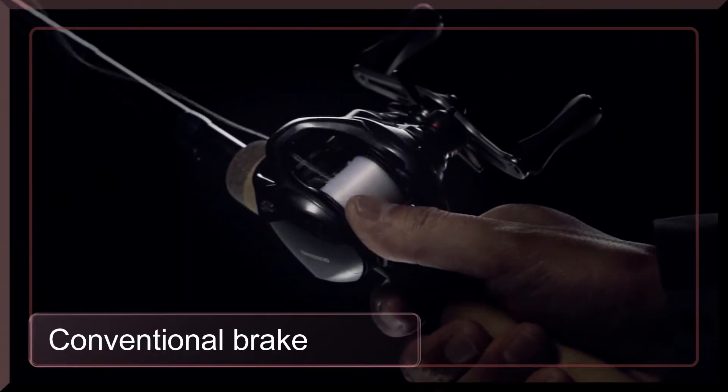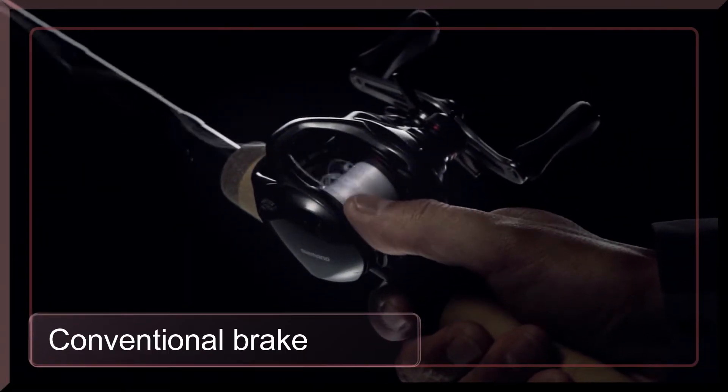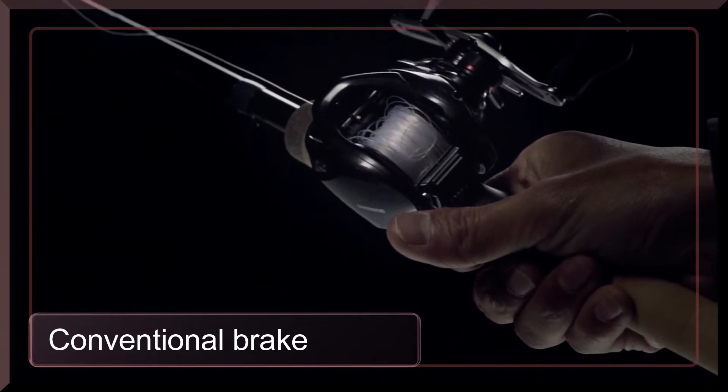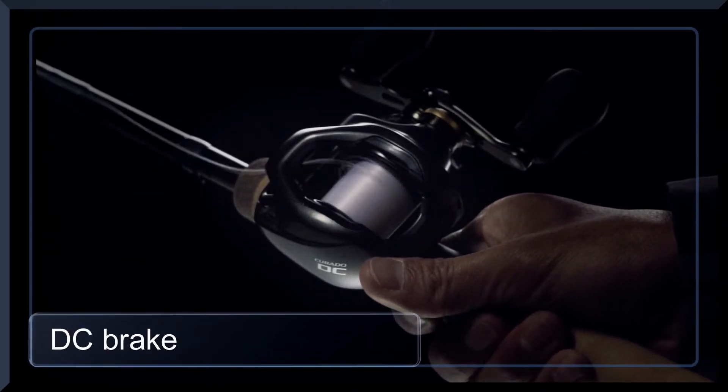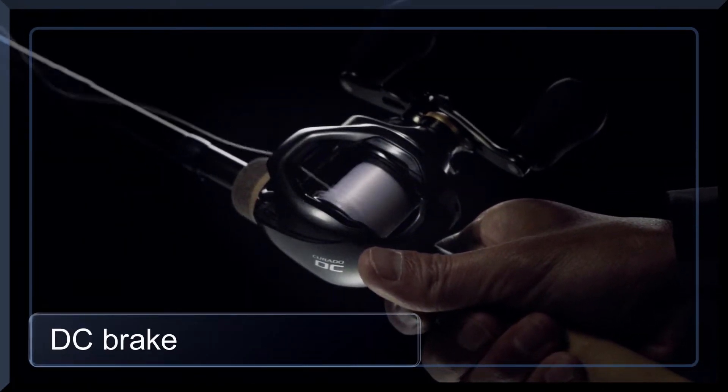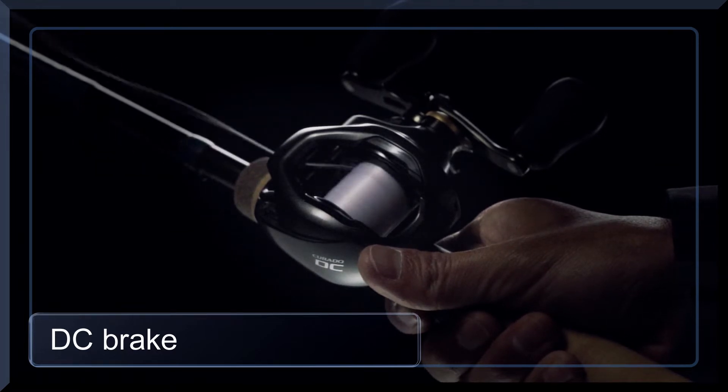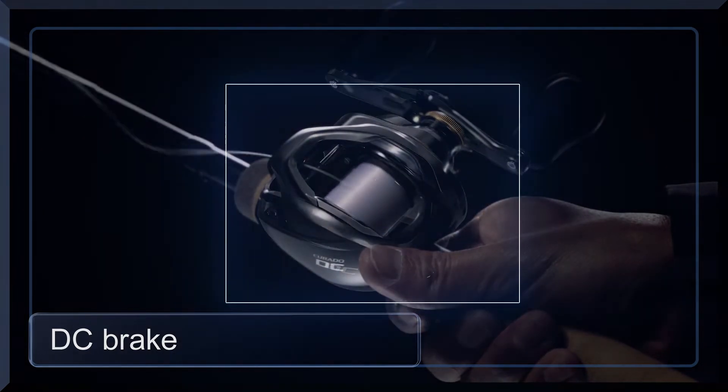Conventional braking systems require a substantial amount of thumbing to prevent backlash. But DC Brake eliminates trouble and reduces thumbing. DC Brake provides ultra-long distance for anglers with less thumbing and trouble.